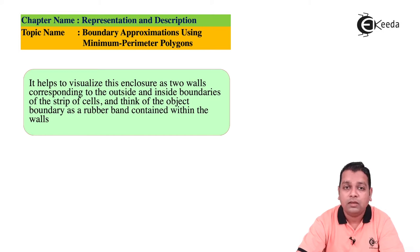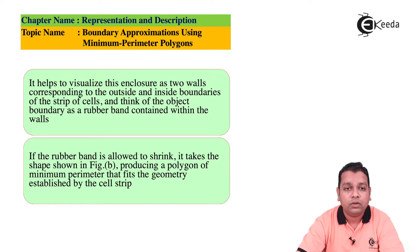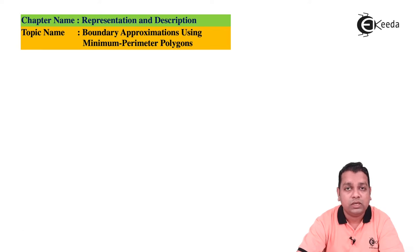We can think of the object boundary as a rubber band contained within the walls. If the rubber band is allowed to shrink, it takes the shape shown in Figure (b), producing a polygon of minimum perimeter that fits the geometry established by the cell strip.